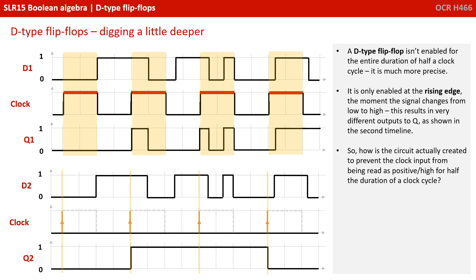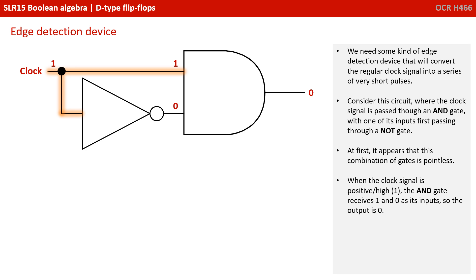How is the circuit actually created to prevent the clock input from being read as positive or high for half the entire duration of a clock cycle? We need some kind of edge detection device which will convert the regular clock signal into a series of very short, sharp pulses.